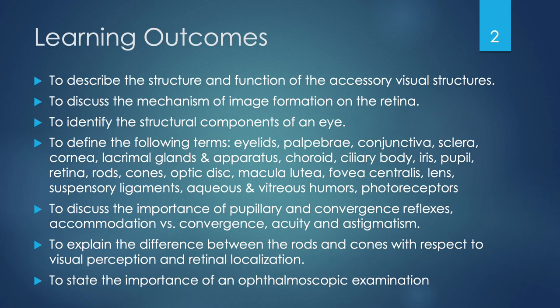The learning outcomes for this unit are rather lengthy. I'm going to go through all of them anyway because your time is limited and valuable, and you need to focus on certain material properly and spend your time wisely. So let's discuss what we need to do at the end of this unit. The outcomes include to describe the structure and function of the accessory visual structures, to discuss the mechanism of image formation on the retina, to identify the structural components of an eye, and to define the following terms.